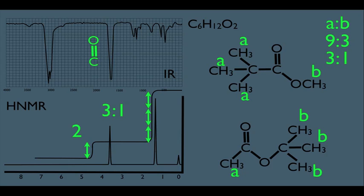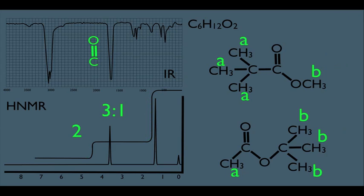Let's do the same analysis for the bottom one. There are three A hydrogens and nine B hydrogens — reducing to its simplest form, you also get a one to three, or three to one ratio. So integration also doesn't rule out these structures. We really only have one more aspect to inspect, and that is the chemical shifting.